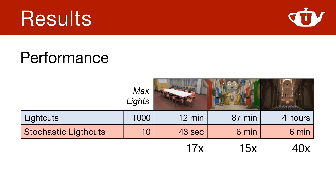Comparing the performance of fully converged light cuts using up to 1000 light samples against stochastic light cuts with only 10 light samples, we see substantial speed-ups ranging from 15x to 40x in these scenes. If we use the same light sample bound for both methods, we see the overhead of stochastic light cuts. Part of this overhead comes from the cost of hierarchical sampling using the entire light tree, as opposed to just picking the representative lights. But most of it comes from the fact that light cuts in this scene uses the very same 10 light sources for the entire image, so it's very cache-friendly.